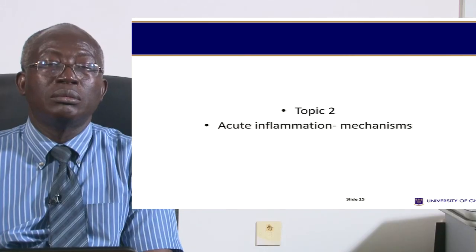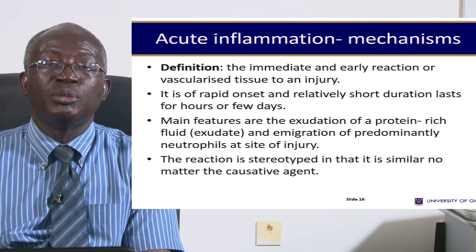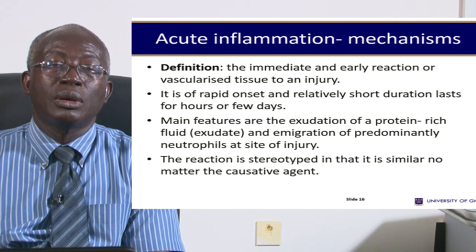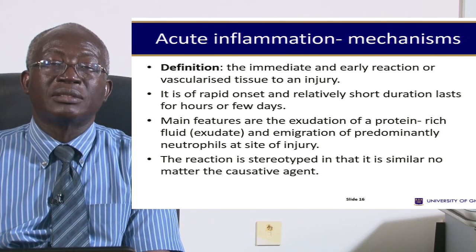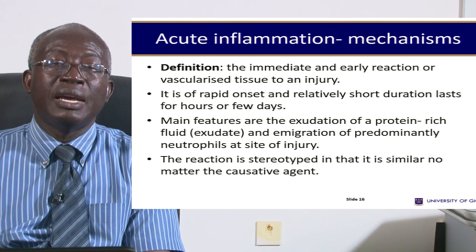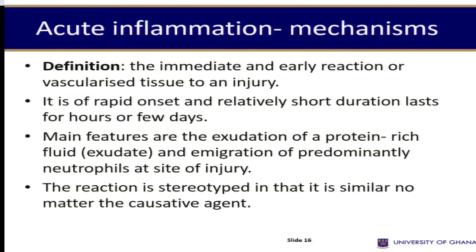Let's move to the mechanisms of acute inflammation. Acute inflammation may be defined as the immediate and early reaction of vascularized tissue to an injury. It is rapid in onset and lasts for a few hours or days. The main features are fluid exudates, and no matter the cause, the reaction is the same in acute inflammation — so acute inflammation may be termed stereotyped.